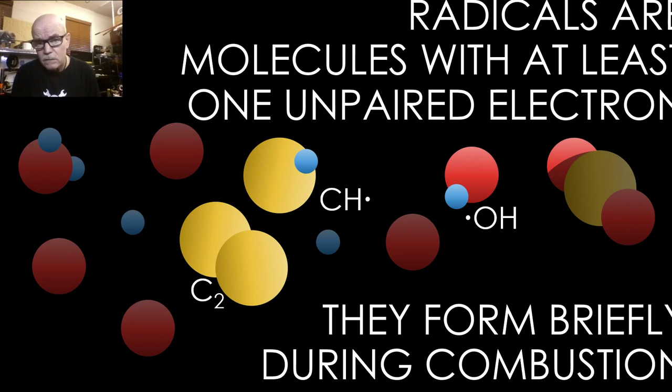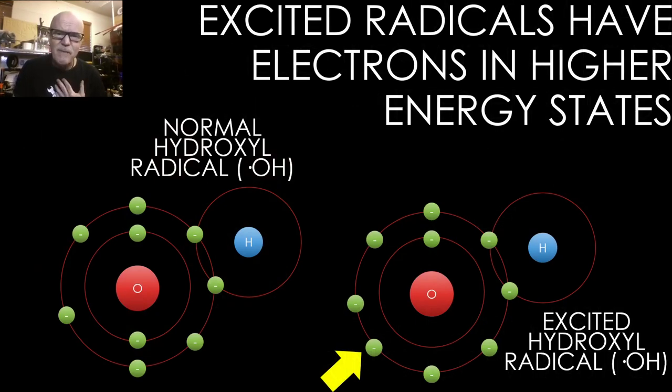So a radical is a term for a molecule with at least one unpaired electron. And they form very briefly, they're not a particularly happy state for a molecule to be in, but there's a lot going on as all that energy is pumped into a system. And for brief periods, you get these molecules with unpaired electrons. Now, an excited radical, which is what I would want to be, basically means that we see on the left a normal hydroxyl radical. Hydroxyl means it's an oxygen hydrogen combo.